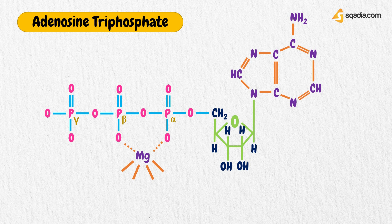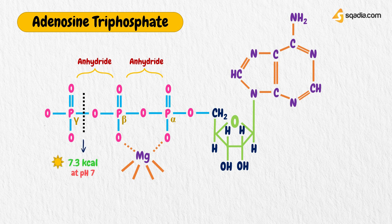The ATP molecule has two phosphoanhydride bonds that provide the energy for life. When hydrolyzed at physiological pH, one mole of ATP releases 7.3 kilocalories, or 30.66 kilojoules, as energy, which can be used for metabolic purposes.